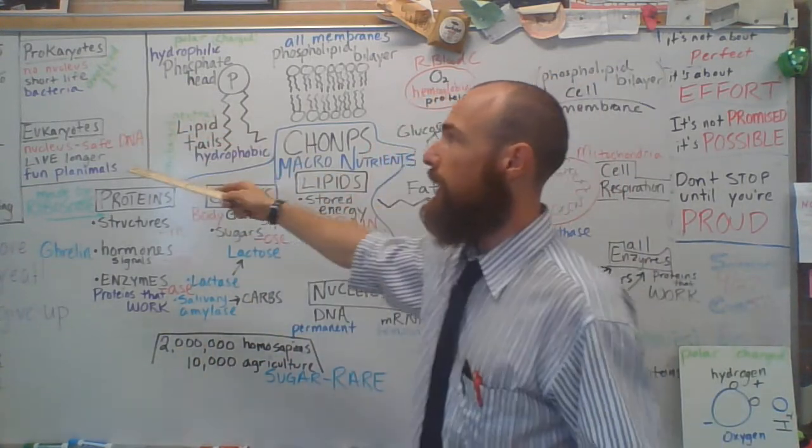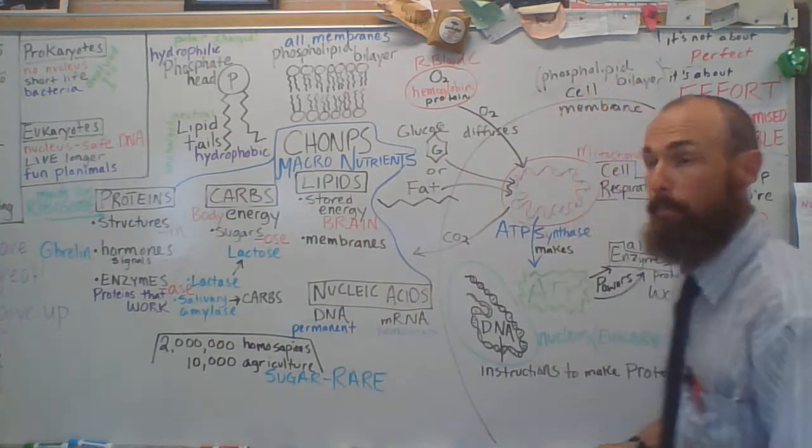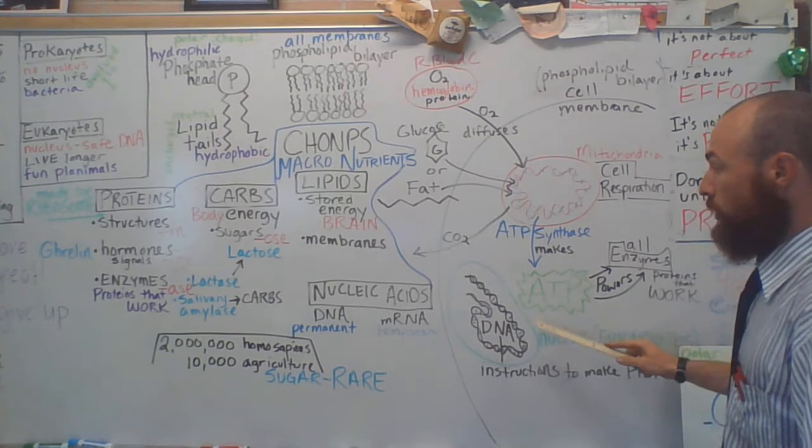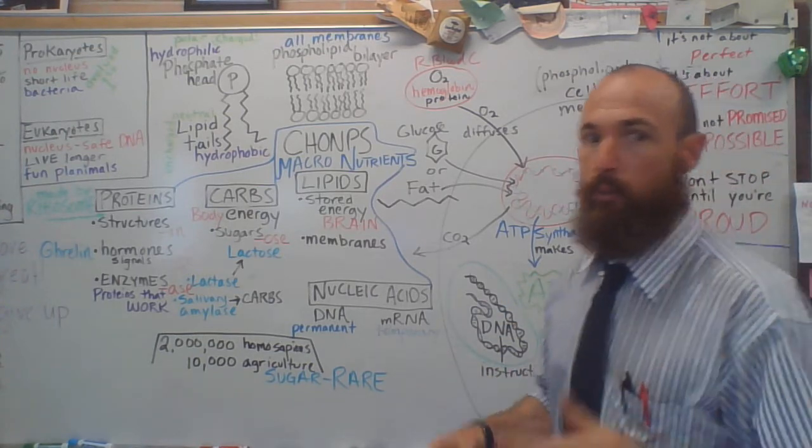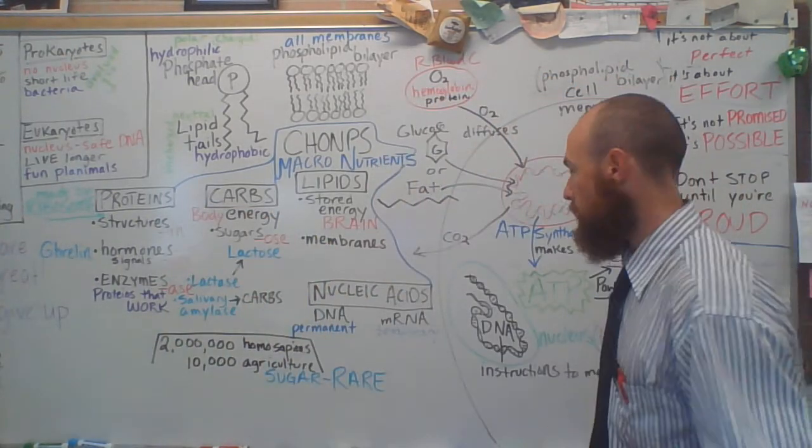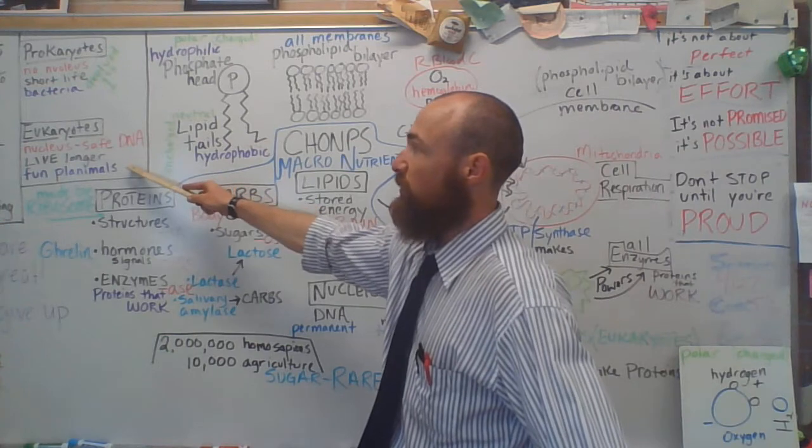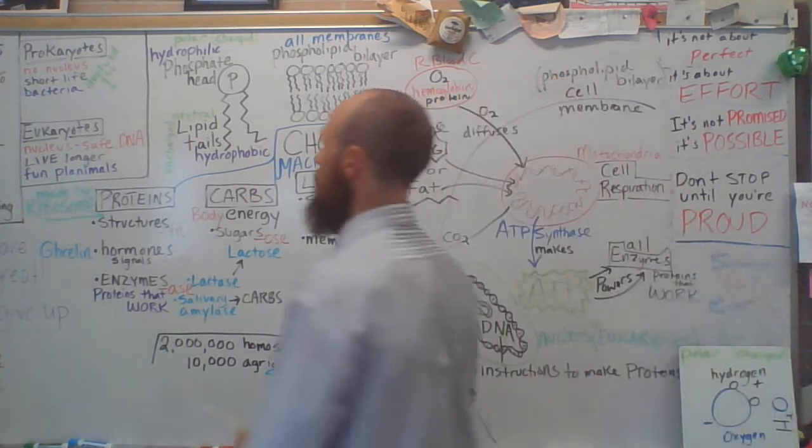Eukaryotes, evolving second, said, hey, let's keep this DNA safe. Let's wrap this thing up in a membrane, called a nuclear membrane, and that membrane is going to keep that DNA safe, protected from radiation, or viruses, or any other attacking organisms, and you keep that DNA safe, you can live a lot longer. That's for fungi, plants, and animals, which we call fungplanimals.